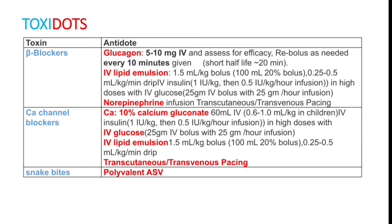Next drug is calcium channel blocker. You can give the antidote calcium — 10% calcium gluconate, 60 ml IV. IV glucose is the next treatment option: 25 gram IV bolus can be given and continued as infusion. IV lipid emulsion can also be given — 1.5 ml per kg bolus, followed by 0.25 to 0.5 ml per kg per minute infusion drip. Transcutaneous or transvenous pacing can be done for patients not responding.